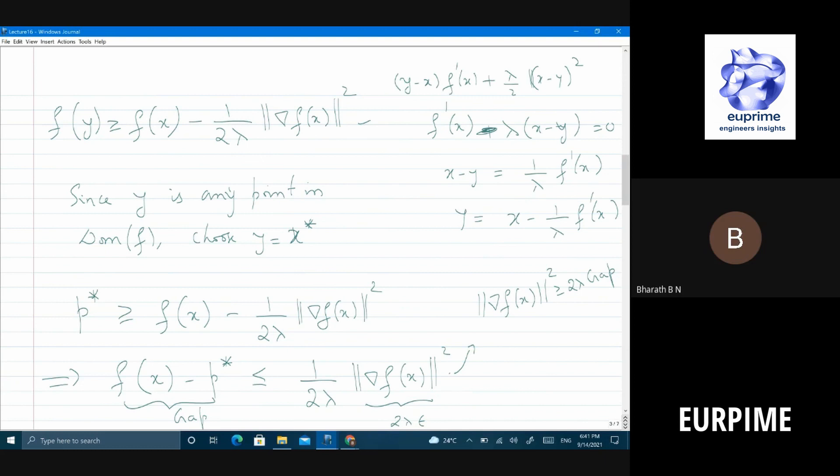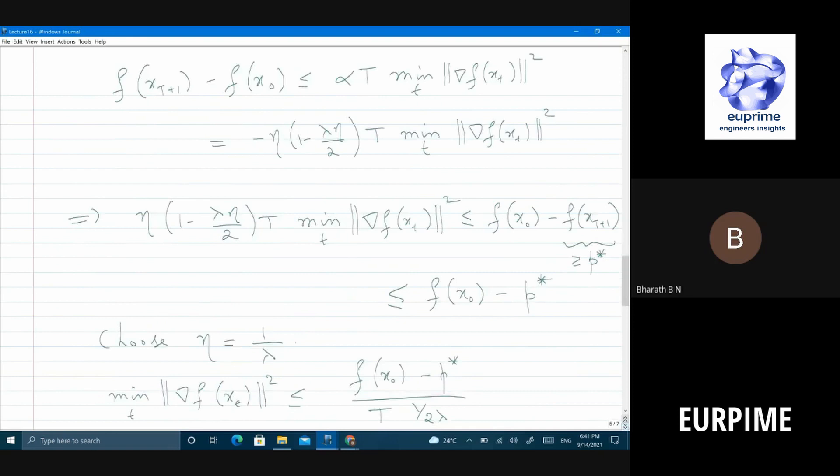So there is a name for this - it's called PL inequality. In fact, this is one of the key tools in understanding deep neural networks. PL stands for... I think Polyak-Łojasiewicz, those are some names. What is so interesting about this? Even if it is a non-convex function, but if you can prove that it satisfies PL inequality, still there is some hope you can go to global optima. There is some hope under certain conditions. That's why it's very important. Anyway, this is just an aside.